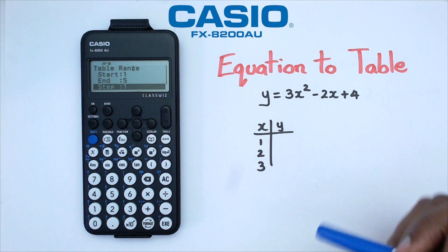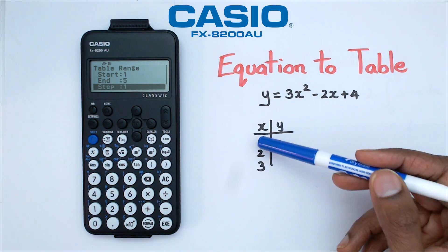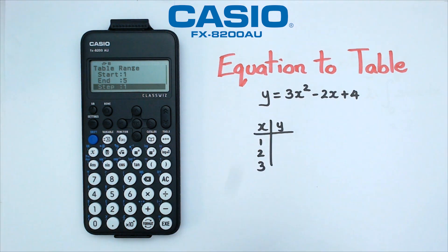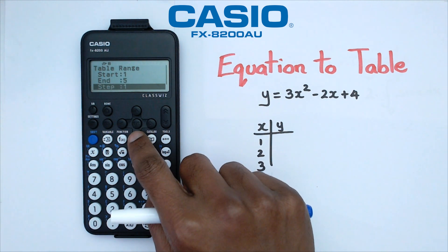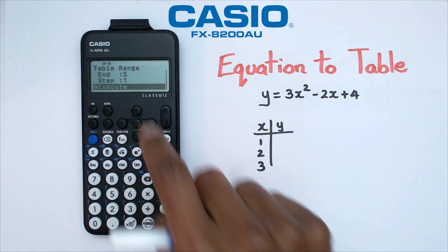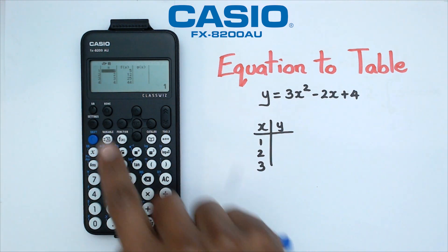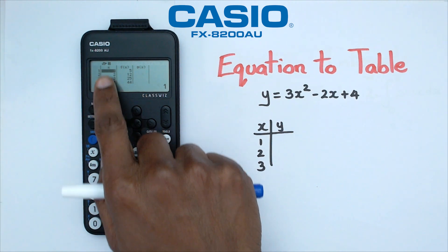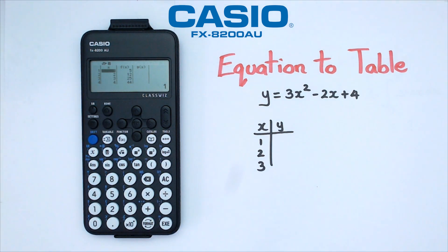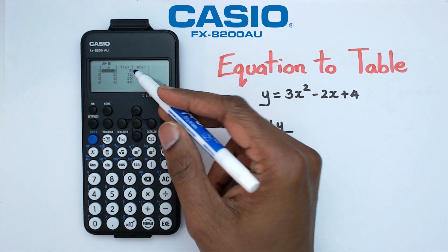That basically means that we're going to get the table that's going to go from 1, 2, 3, 4, and 5. Once you do that, we're going to go all the way down to that menu, and there's a button called execute. Click on that, and what you have is you've got the x values, which is 1, 2, 3, and the corresponding y values are actually given.